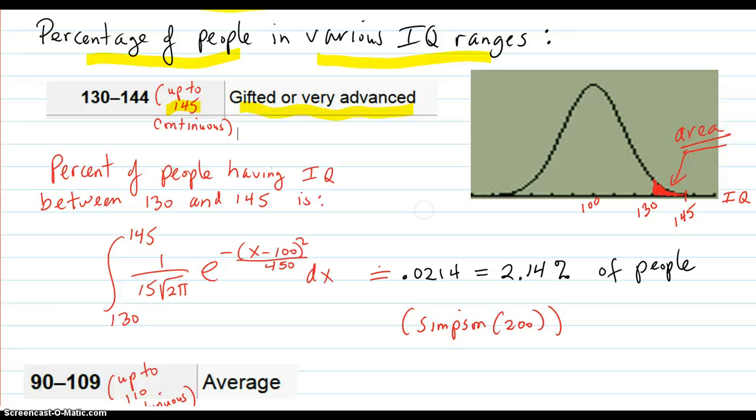So the percent of people having IQ between or in that range, 130 to 145 is the integral from 130 to 145 of the function dx. And you integrate that and you get 0.0214 using Simpson 200. And that's 2.14% of people.